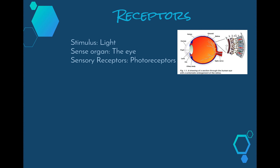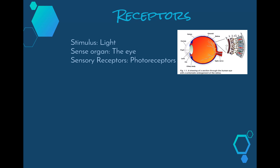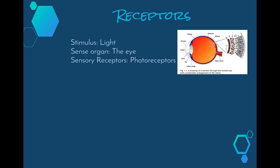Let's start off with the stimulus of light. The sense organ that detects light is our eye and within our eye we have photoreceptors. These photoreceptors are divided into rods and cones that are found in the retina of the eye, which is the very back layer of our eye. We'll be spending time looking at what the retina does and what the rods and cones do a little bit later in the topic. The function of the photoreceptors is to detect three things: light, colour and movement.